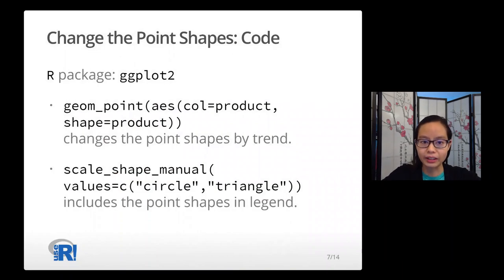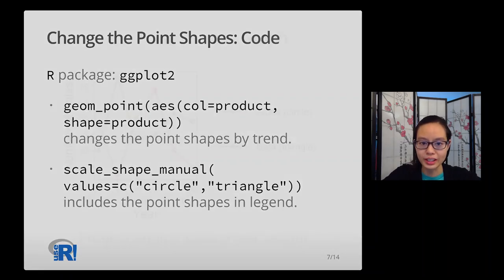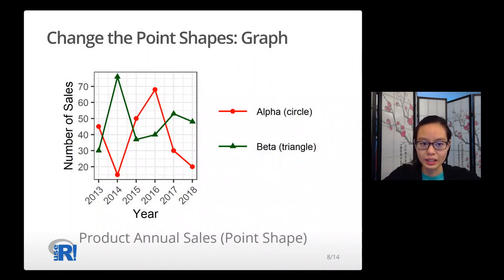On the other hand, we can also change the point shapes to make the graph accessible. The geom_point(shape = product) changes the point shapes by trend, and scale_shape_manual, circle and triangle, includes the point shapes in the legend. This is another accessible graph where alpha is the circle points and beta is the triangle points. So people can distinguish this graph with the point shapes even without colors.